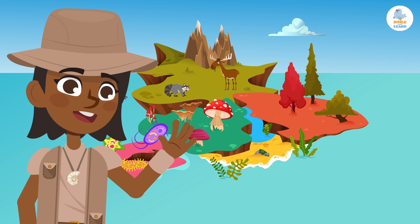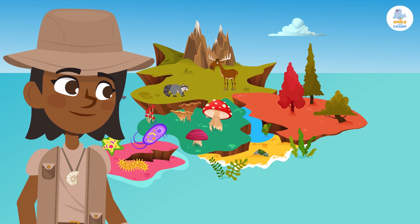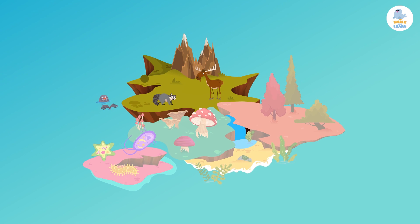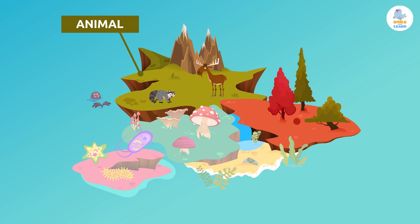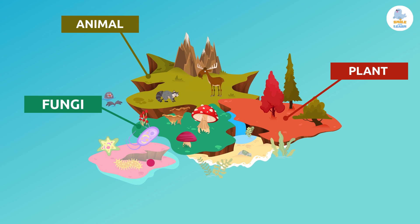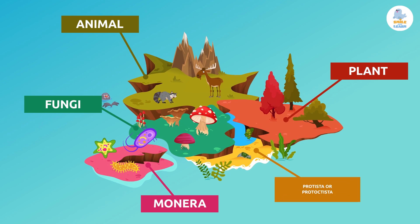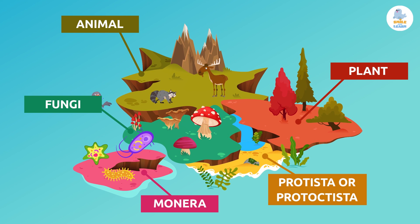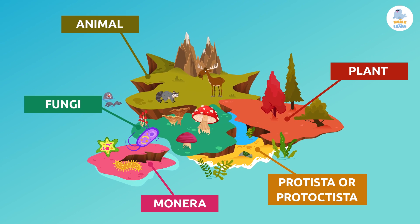Well, let's get down to business. There are many ways to classify living things, but the most common way is to group them by kingdoms. There are five kingdoms in total: animal, plant, fungi, monera, and protista, also called productista.